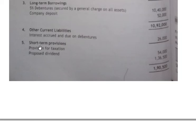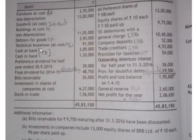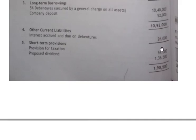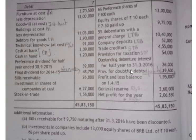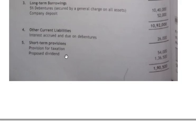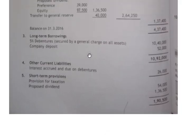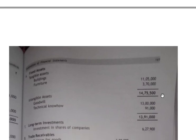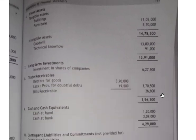Short-term provisions working note: provision for taxation is fifty-four thousand. We do not consider provision for doubtful debts here. We also consider proposed dividend of one lakh thirty-six thousand five hundred, which is the total of preference and equity proposed dividends calculated earlier. Total short-term provisions come to one lakh ninety thousand five hundred.